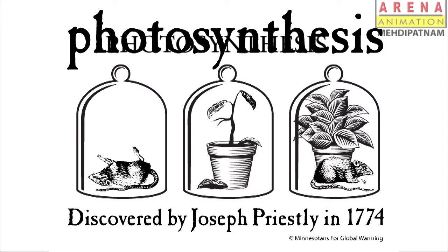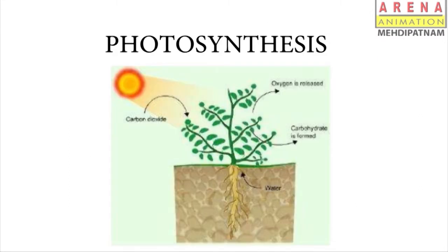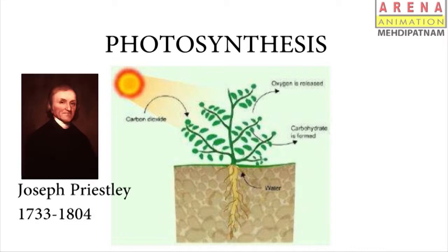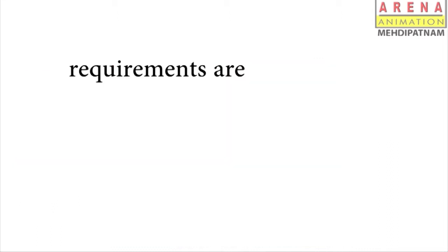Photosynthesis is a process used by plants and other organisms to convert light energy, normally from the sun, into chemical energy that can be later released to fuel the organism's activities. We are going to discuss the role of air in photosynthesis through this experiment.